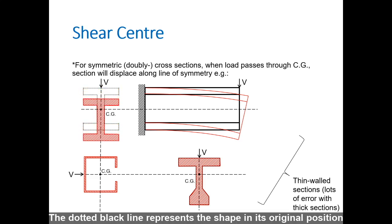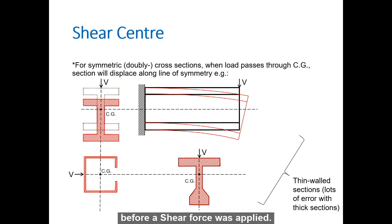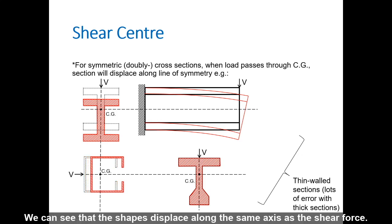The dotted black line represents the shape in its original position before a shear force was applied. We can see that the shapes displace along the same axis as the shear force.